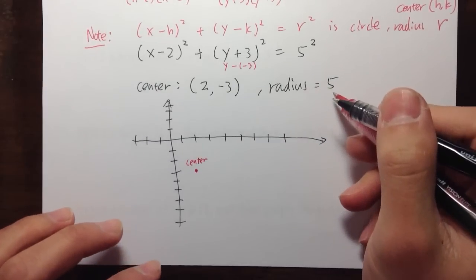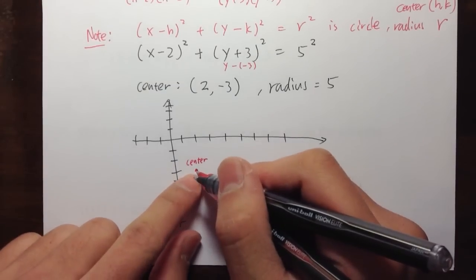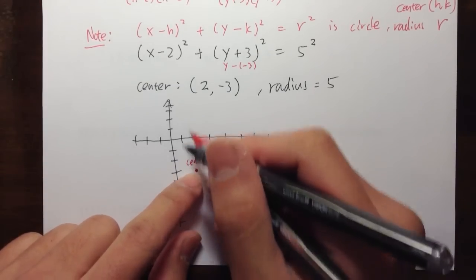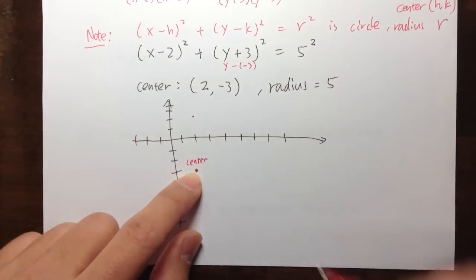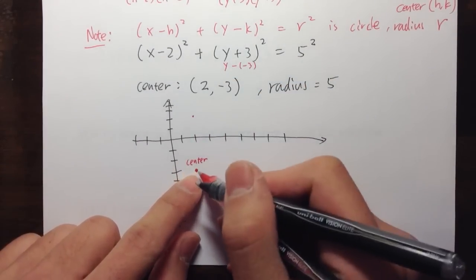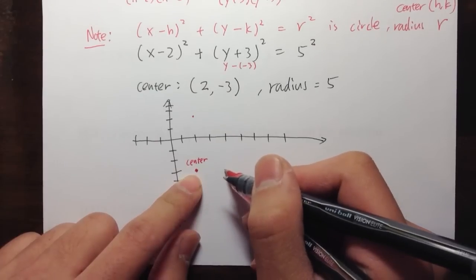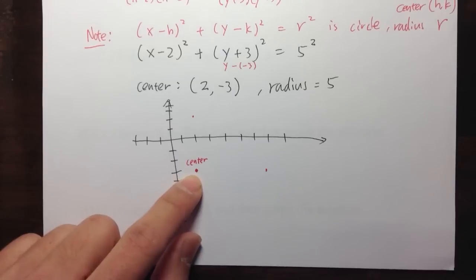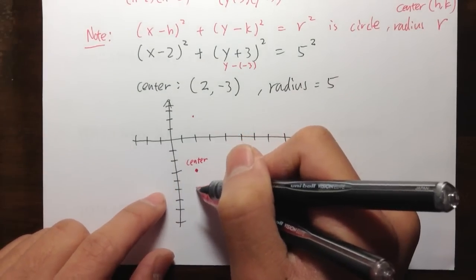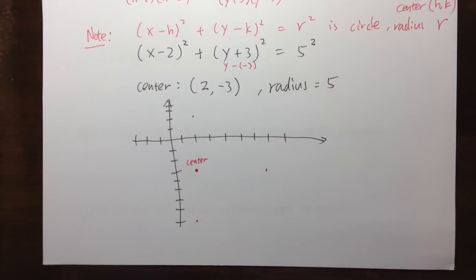The radius is equal to 5. Starting from the center, go up 5 units and put a point there. Then from the center, go to the right 5 units. Then go down 5 units. My picture is not perfect, but you understand how this works.